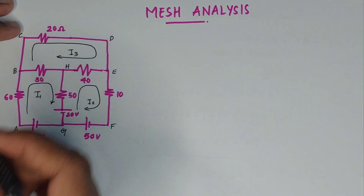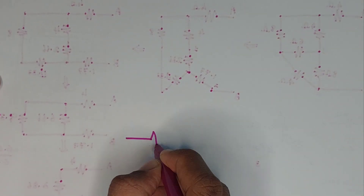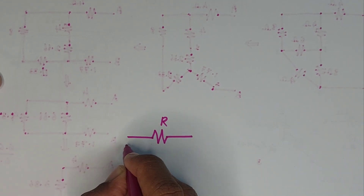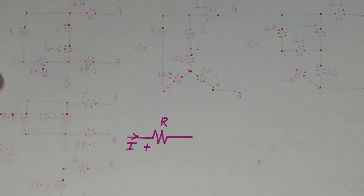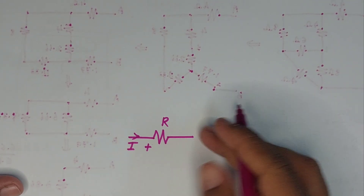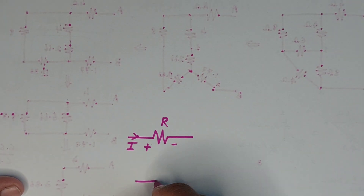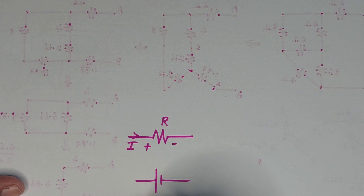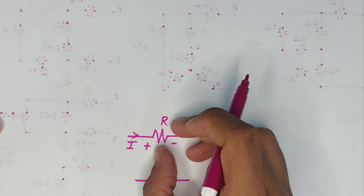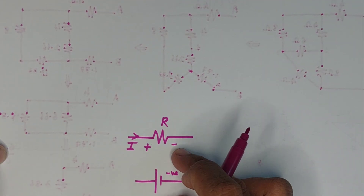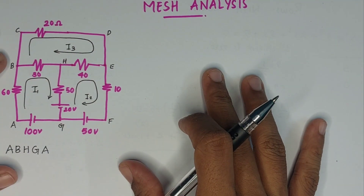Now let's assign polarities to the resistors. Each resistor has a positive terminal and a negative terminal based on the direction of the mesh current flowing through it. This gives us the signs we need for the voltage terms. This leads us to the first mesh equation.